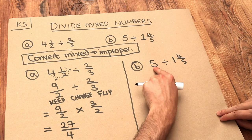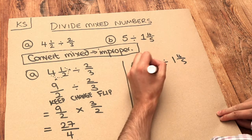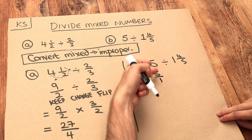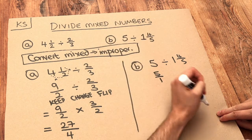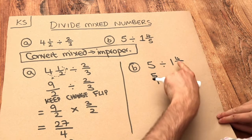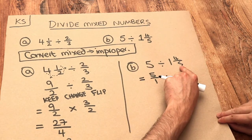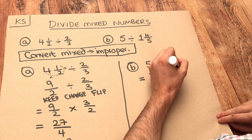Now interestingly this is not even a fraction, and if that happens you can just write it as 5 over 1, because 5 divided by 1 is just the same as 5, isn't it? We've got divide, and then we need to convert this to an improper fraction: 1 times 5 is 5 plus 4 is 9, so it's 9 over 5.